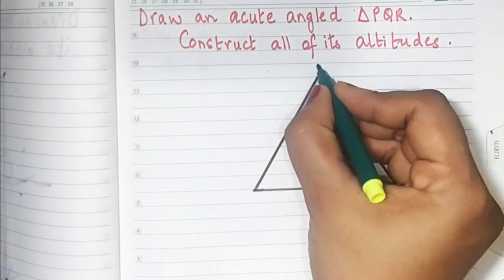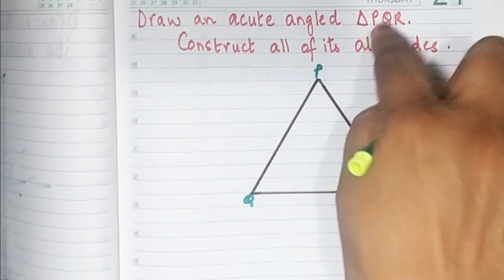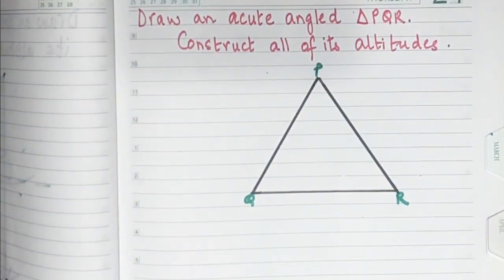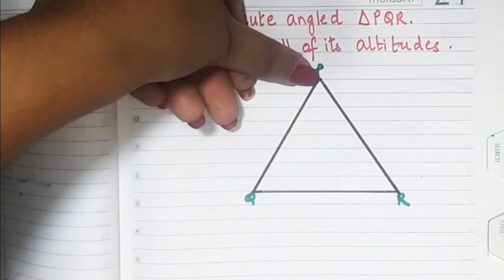Let's label it. See it's PQR, since the question says PQR, we'll label it as PQR and now let's construct its altitudes. The first thing we'll do is we'll construct from point P.